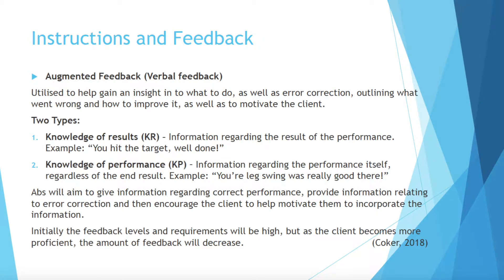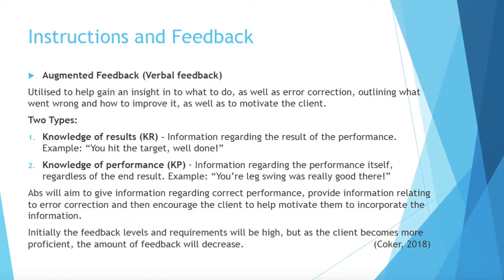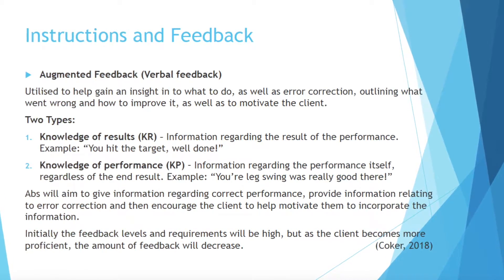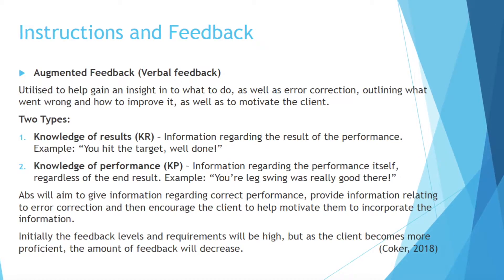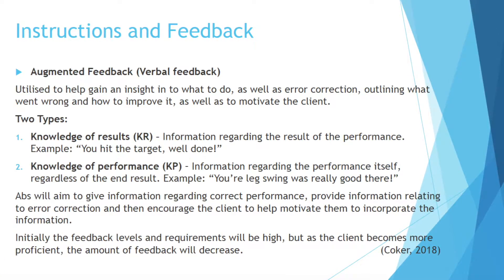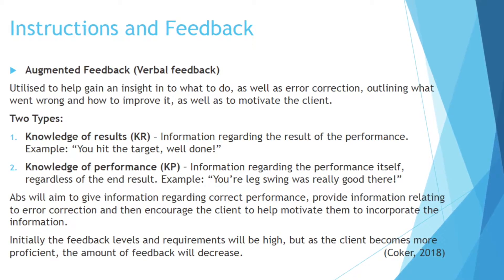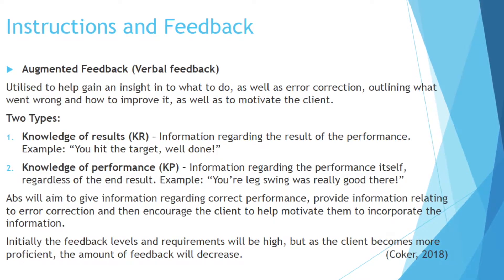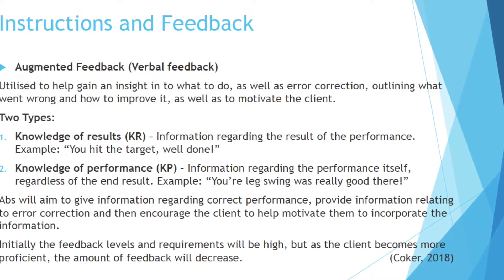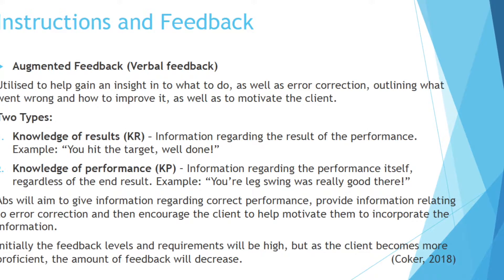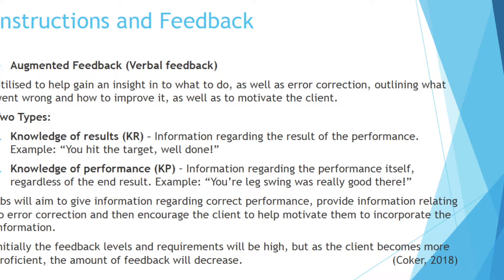Verbal feedback is used to help gain insight into what to do, as well as error correction — outlining what went wrong and how to improve it — and also to motivate the client. There are two types of augmented feedback: knowledge of results, for example 'well done, you hit the target,' and knowledge of performance, for example 'well done, your leg swing was really good there.' I will aim to give information regarding correct performance, provide error correction, and encourage the client to help motivate them. Initially, feedback levels will be higher, but as the client becomes more proficient, the amount of feedback will decrease.